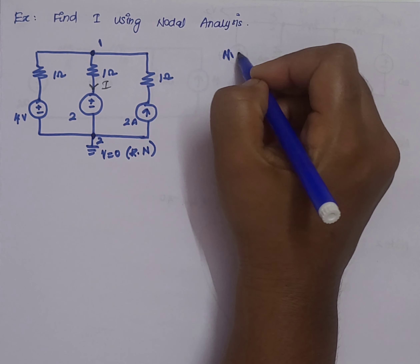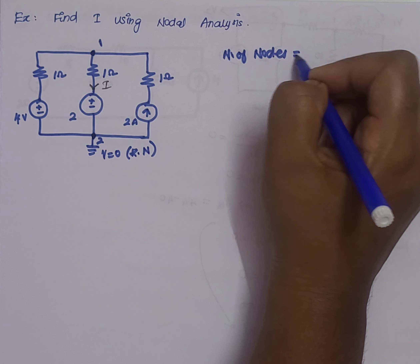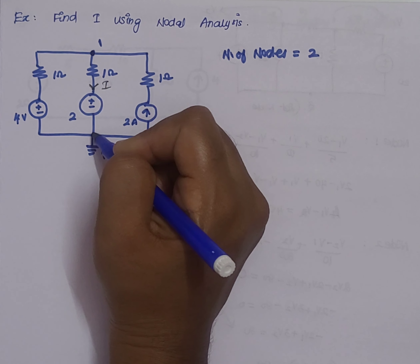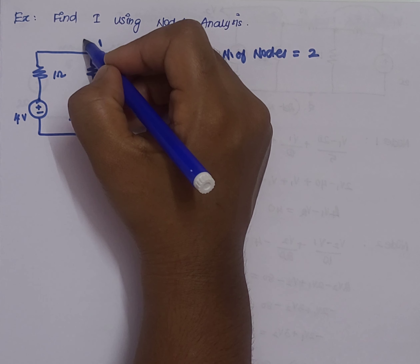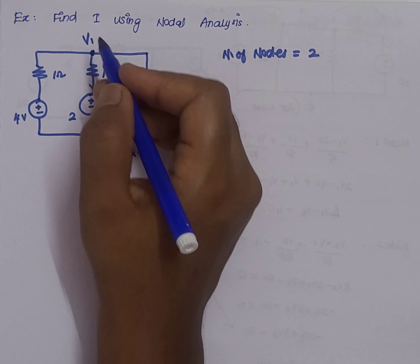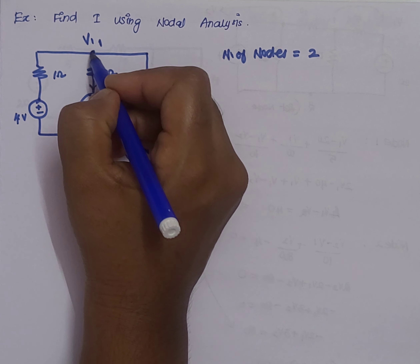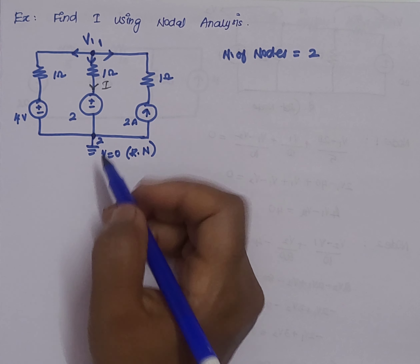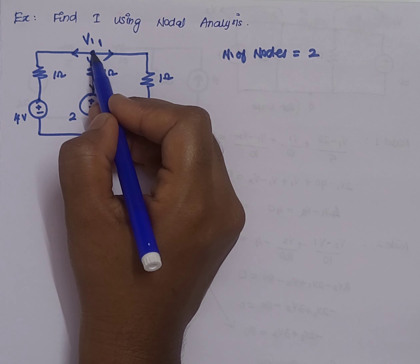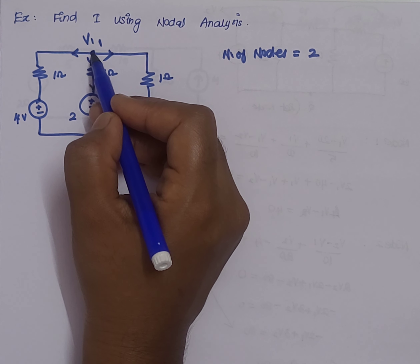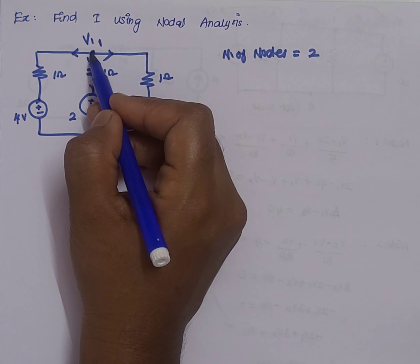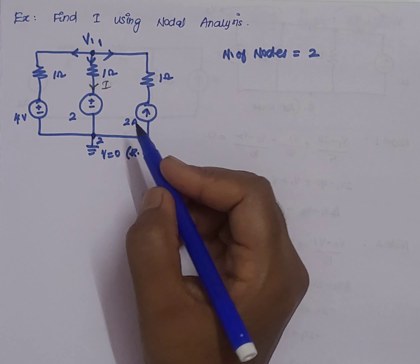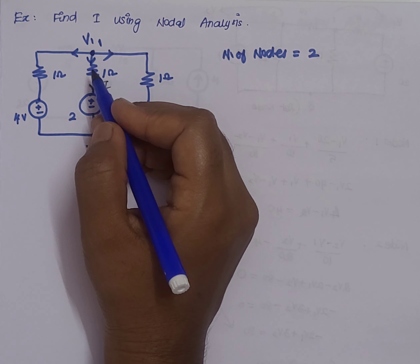The number of nodes equals two. At the first node, we assign voltage V1. The second step is to assume that all currents are flowing outward from this particular node — that is, all currents are leaving the node. At this particular junction we apply KCL.